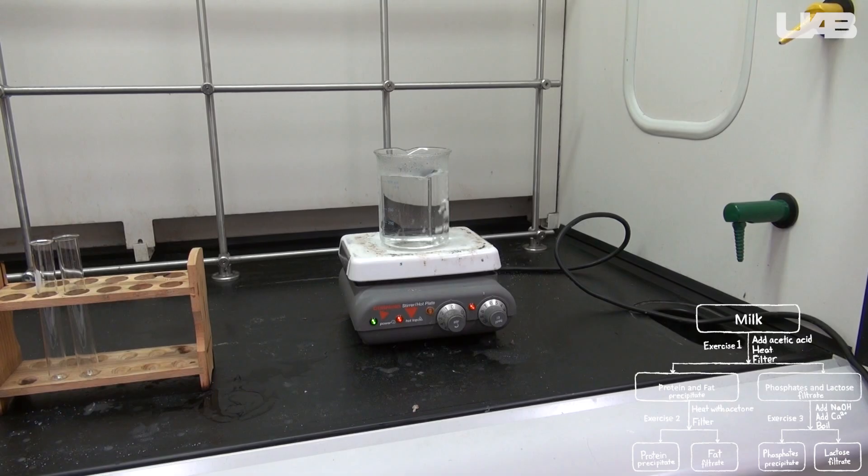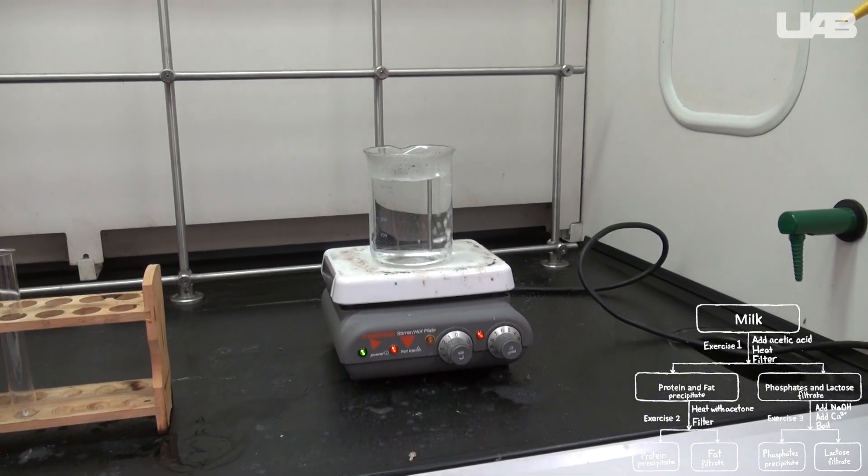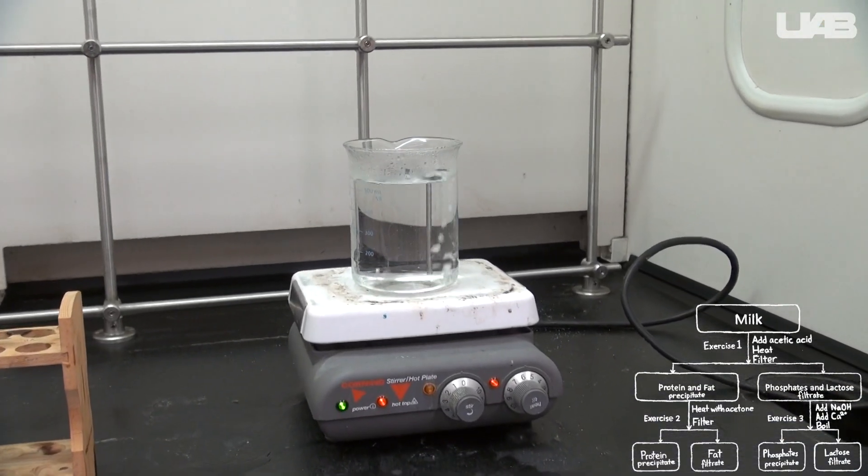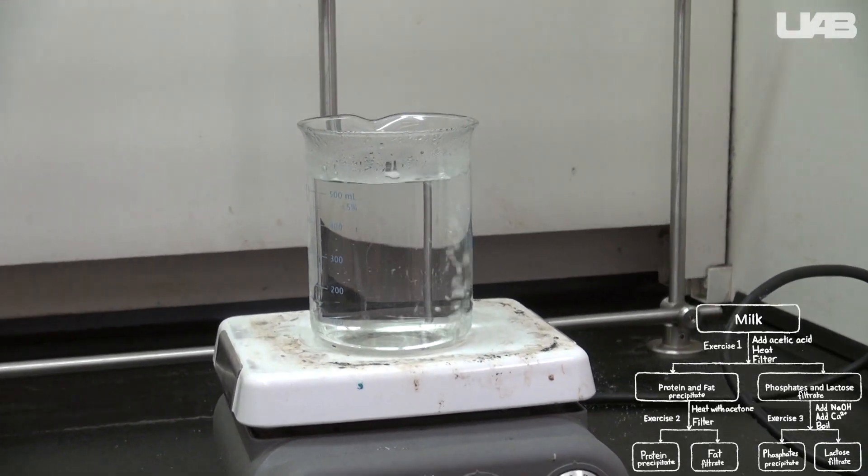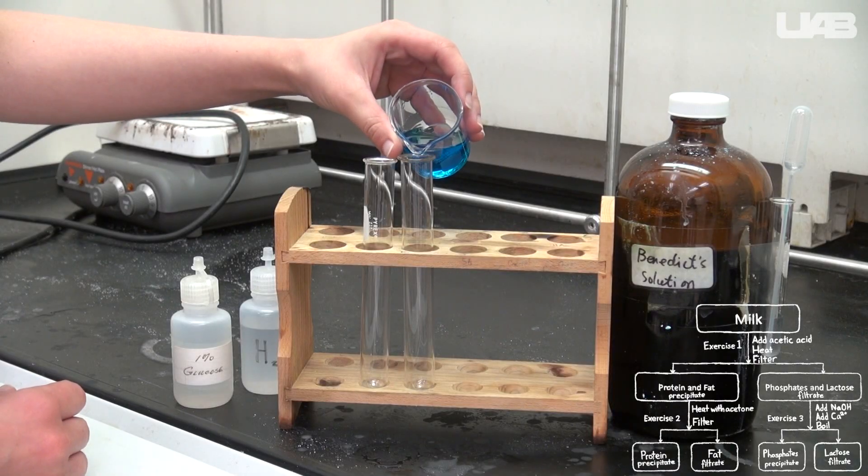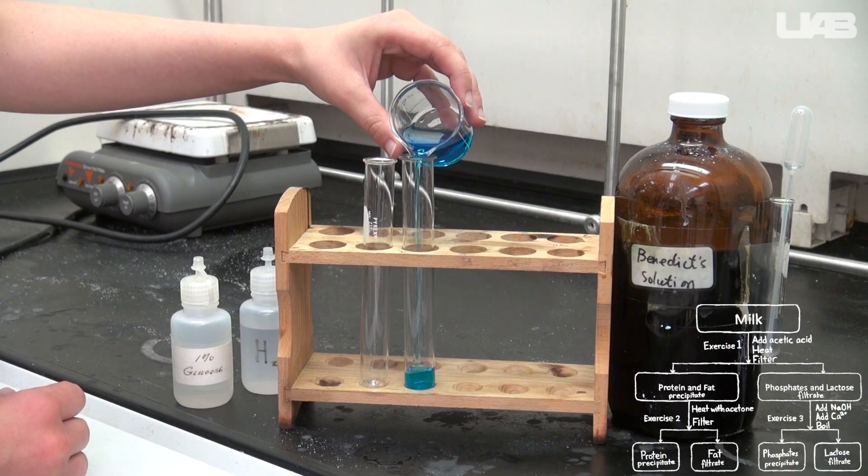You'll need a boiling water bath, so go ahead and start heating a beaker of water on the hot plate at the beginning of the time period so that it will be boiling by the time you're ready to use it. Take two test tubes and add about 5 milliliters of Benedict's solution to each.